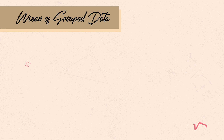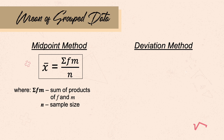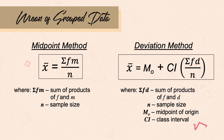I will be discussing two methods of getting the mean of grouped data: the midpoint method and the deviation method. The formula for the midpoint method is: mean equals sigma fm over n, where sigma fm is the sum of products of frequency and midpoint, and n is the sample size. For the deviation method, the formula is: mean equals m sub o plus ci times the quantity of sigma fd over n, where sigma fd is the sum of the products of frequency and deviation, n is sample size, m sub o is the midpoint of origin, and ci is the class interval.